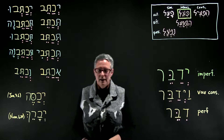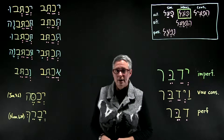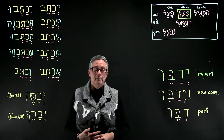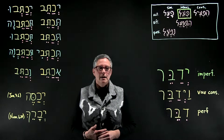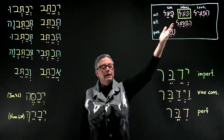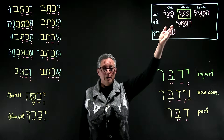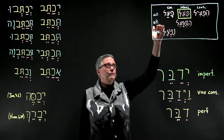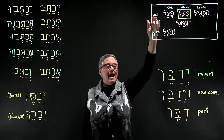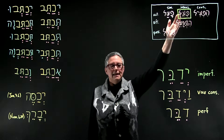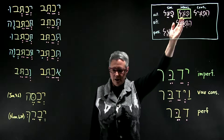This video is about the Piel (PL) imperfect. As you recall, a Piel, generally speaking, reflects active voice and intensive action.